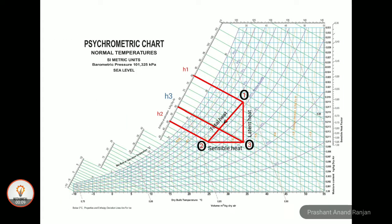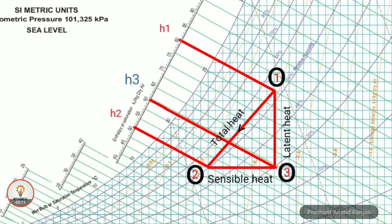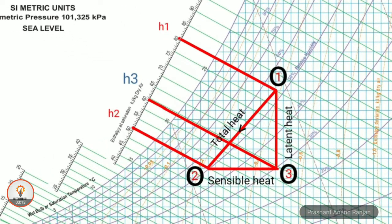Now look at the process 1 to 2, which is sensible cooling with dehumidification. It consists of two parts: first part sensible heating from 0.2 to 3, and second part latent heating from 3 to 1.